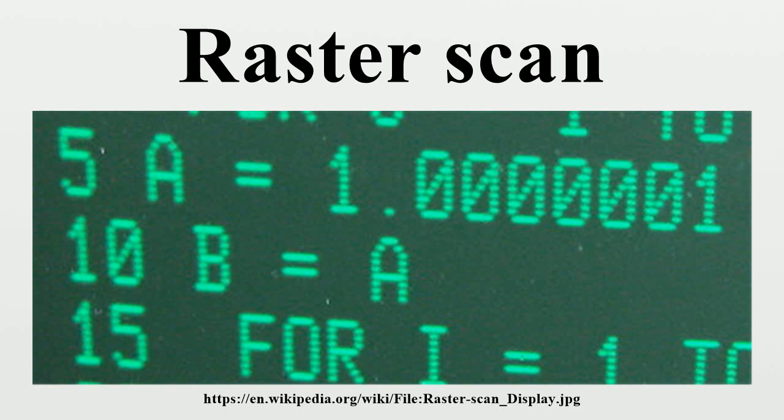Firstly, due to phosphor persistence, even though only one pixel is being drawn at a time, by the time the whole screen has been painted, the initial pixel is still relatively illuminated. Its brightness will have dropped some, which can cause a perception of flicker. This is one reason for the use of interlacing, since only every other line is drawn in a single field of broadcast video. The bright newly drawn lines interlaced with the somewhat dimmed older drawn lines create relatively more even illumination.